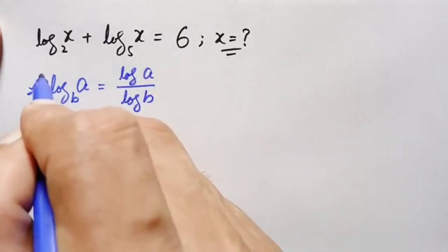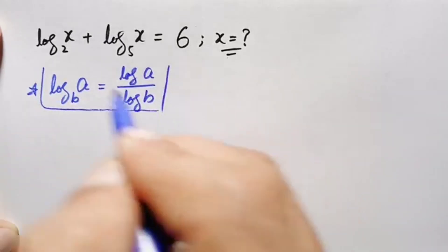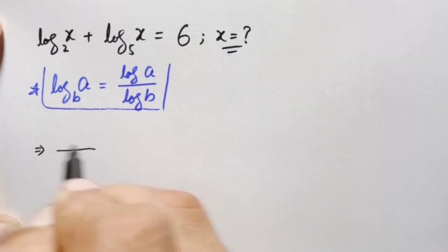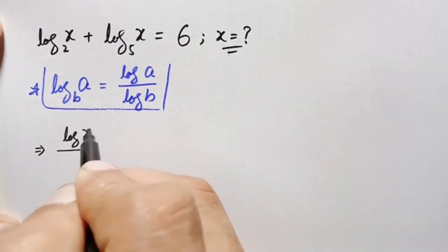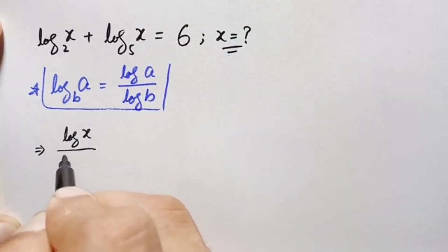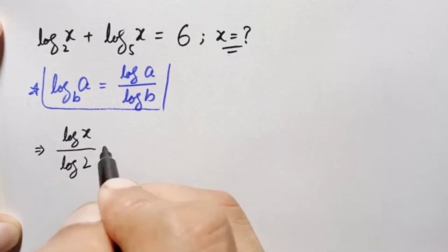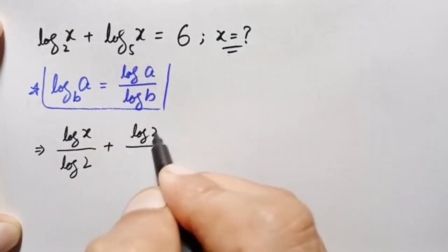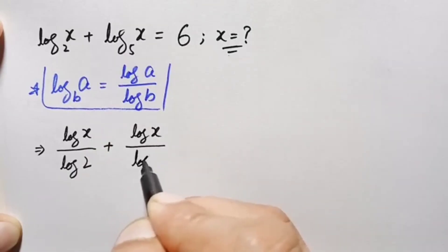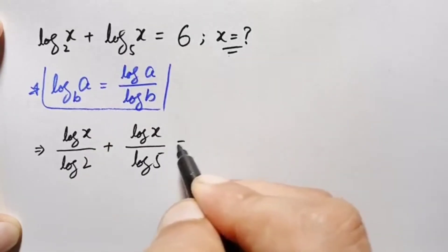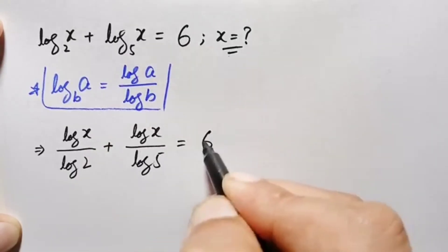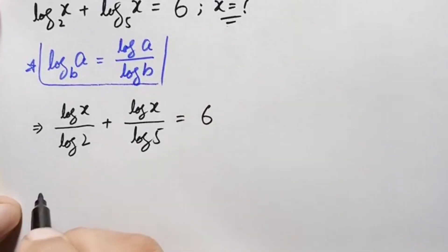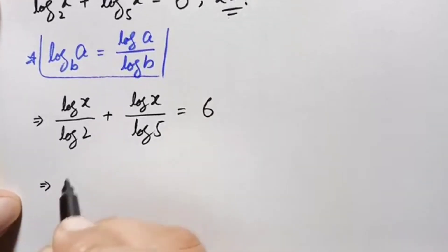Using this logarithm property, the left hand side will become: log of x divided by log of 2, plus log of x divided by log of 5, is equal to 6. Now there is log of x common in the numerator, so we will factor it out.